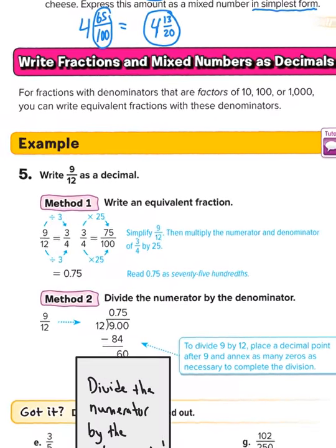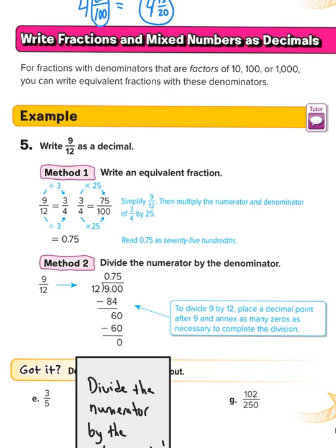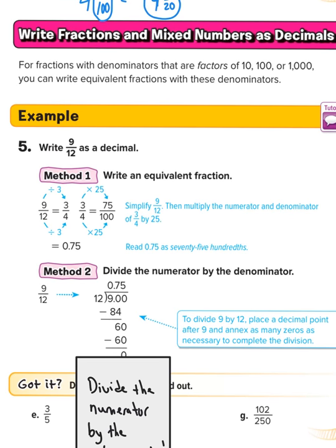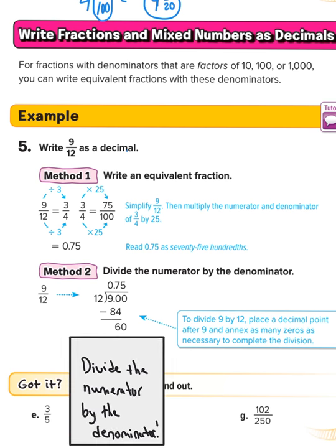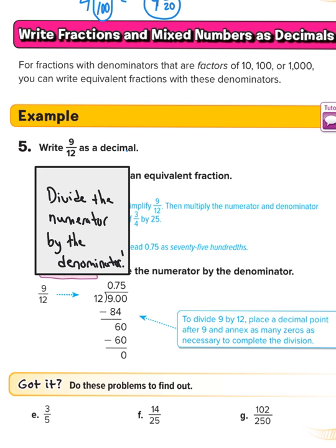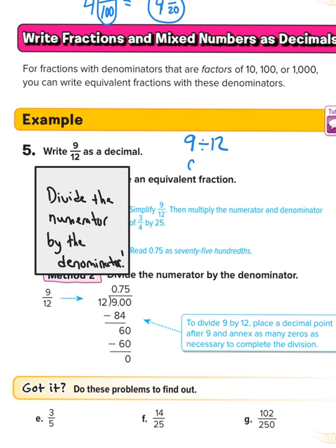Now we're going to do the opposite — take a fraction or mixed number and write them as decimals. They have two examples here, but we're not going to go over method one. We're going to do method two because it's only one thing you have to remember. This is what you should have on the second flap of your graphic organizer — it's only one step: divide the numerator by the denominator. For example, to write nine-twelfths as a decimal, type in 9 divided by 12 on your calculator. It's very important you type it in the correct order — the 9 has to be first, this line means divided by, and then 12. Your calculator will give you 0.75, or seventy-five hundredths. We're not doing long division; we're allowed to use calculators.